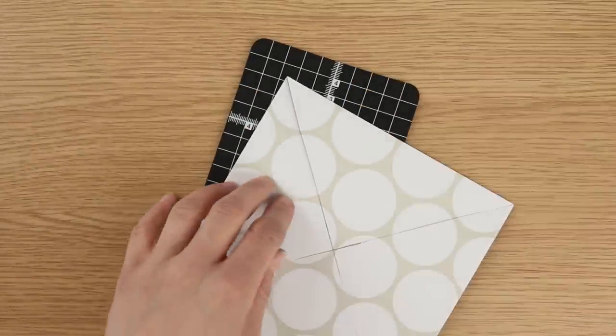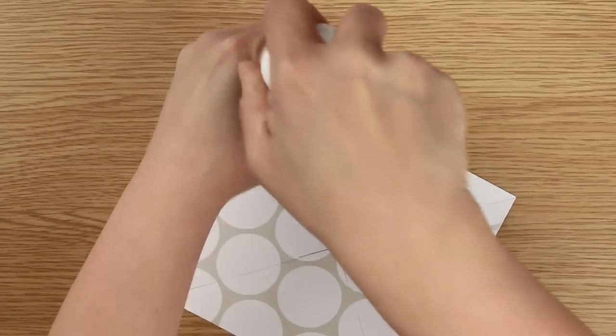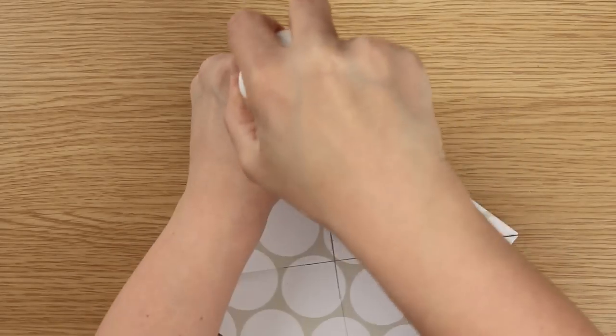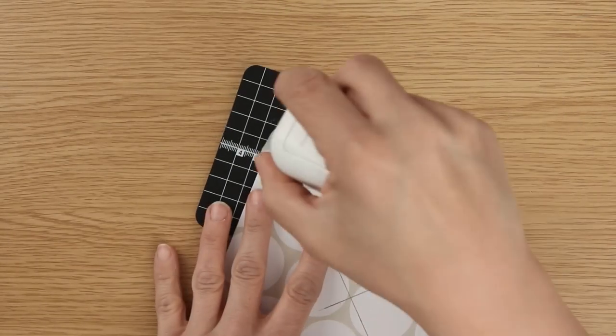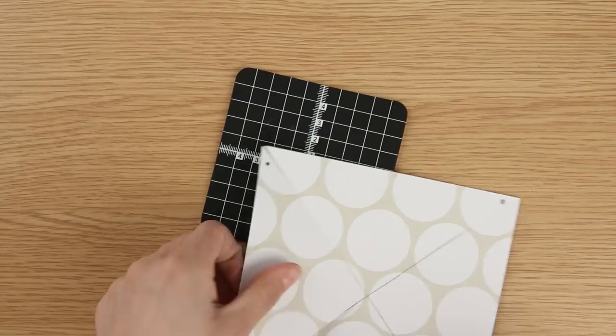We then rotate and punch another hole and continue around until we have a hole in each of the four sections.